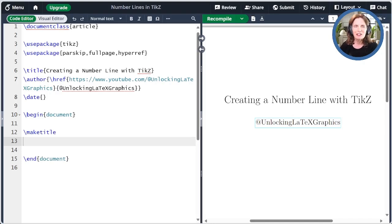I've already created a starting point for us with a document preamble. The main requirement is the package TikZ. The other packages are just for convenience. I'm using parskip and fullpage here just to make things look nice. The hyperref package is so that I can link the author name back to the YouTube channel, as you see over here.